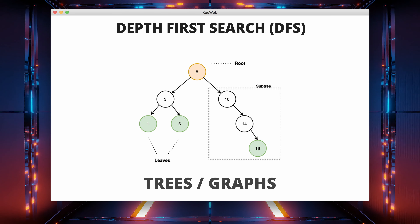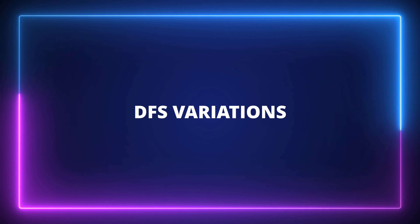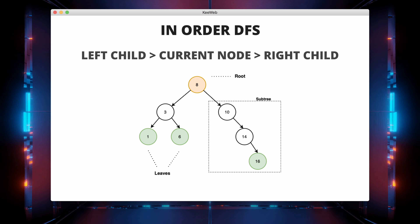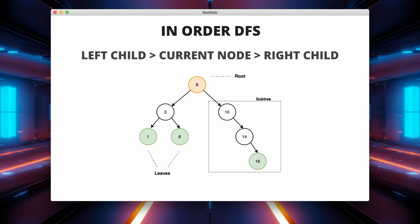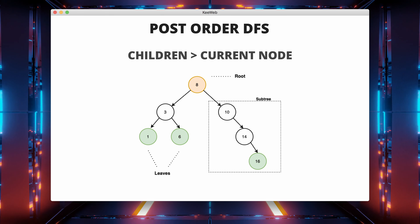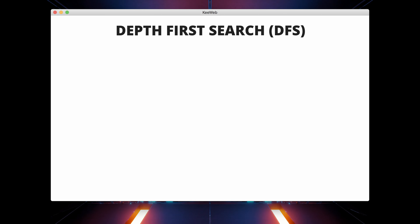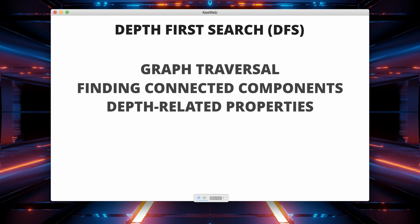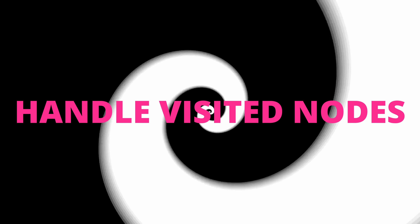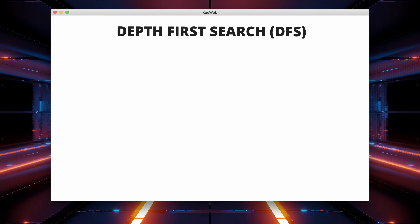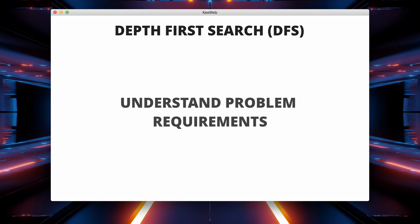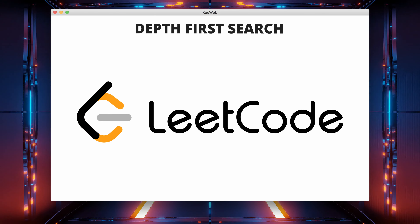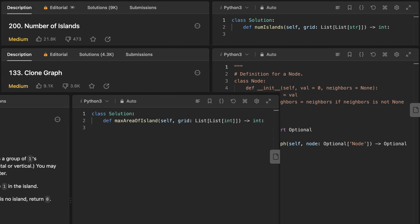DFS can be applied to both trees and graphs, and depending on the specific problem, variations of DFS may be used: pre-order DFS (visit the current node before its children), in-order DFS (visit the left child, then the current node, then the right child), and post-order DFS (visit the children before the current node). Common scenarios where DFS is applicable on LeetCode include graph traversal, finding connected components, depth-related properties and many more. When using DFS, it's crucial to handle visited nodes properly to avoid infinite loops in cyclic graphs or trees. Some LeetCode questions you can try that involve DFS are: Number of Islands, Clone Graph, and Max Area of Island.